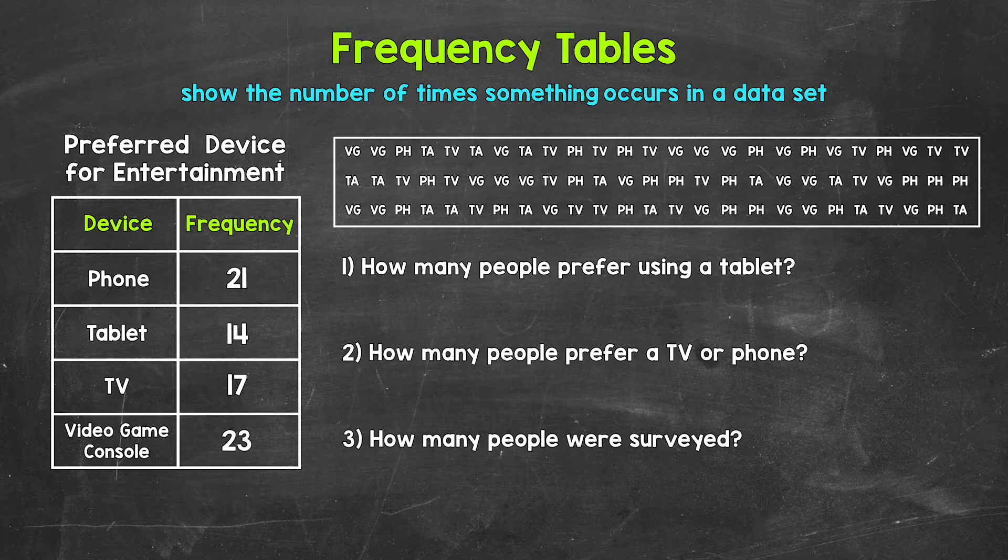they are a way for us to represent and display data in an organized and easier to understand way. Frequency tables show us the number of times something occurs in a dataset. And that something can be a value, a range of values, even something that's non-numerical. So it doesn't have to be numbers. Whatever the case may be, we are looking at the frequency, the number of times something occurs.